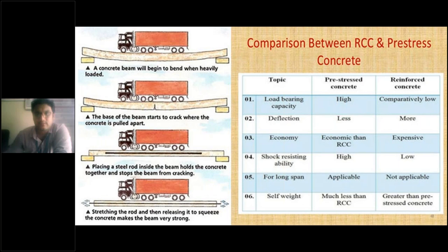That is why prestressed concrete is more economical than reinforced concrete. The fourth parameter is shock resisting ability — PSC has higher shock resisting ability compared to RCC. The fifth parameter is for long spans: PSC is applicable for long spans such as flyovers, elevated structures, and long-span bridges like cable-stay suspension bridges, where the deck itself is highly prestressed. Reinforced concrete is not applicable for long spans.